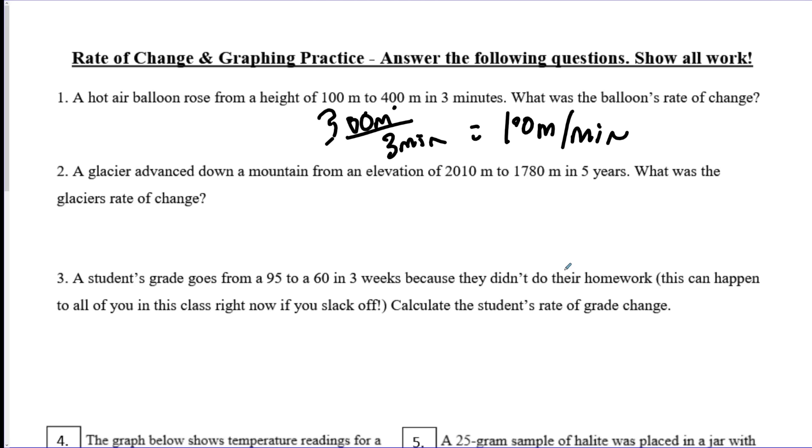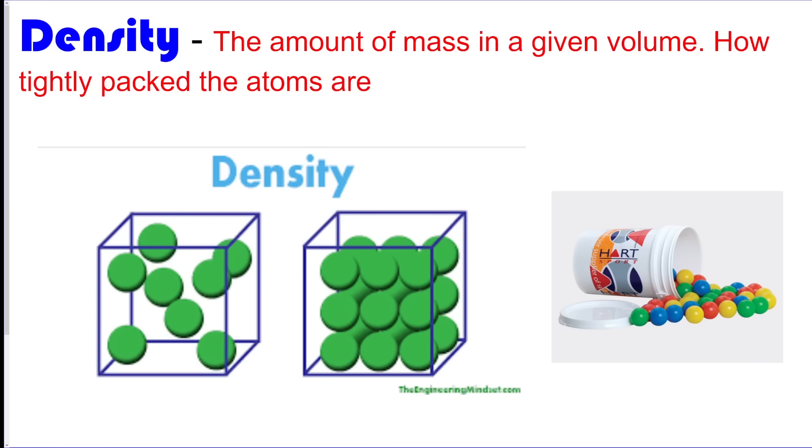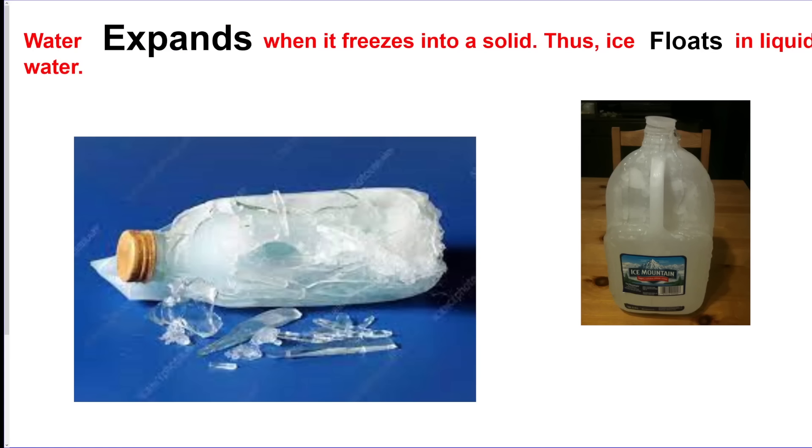All right, we got density. Density is the amount of mass in a given volume, so I like to think about how tightly packed the atoms are in the substance. You should know that water expands when it freezes into a solid, so ice floats in liquid water. Ice is less dense than liquid water. Water is the only substance where its solid form is less dense than its liquid form.